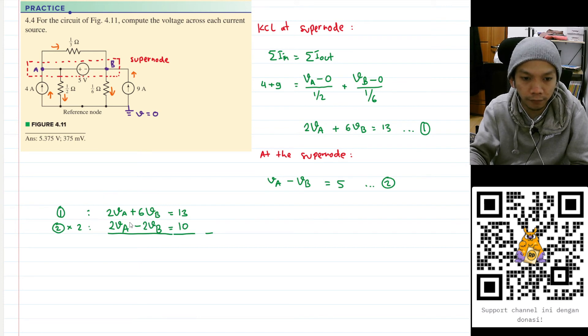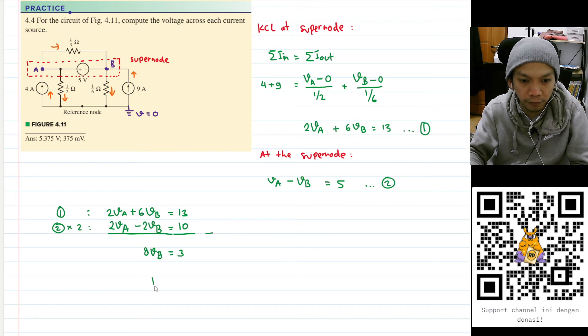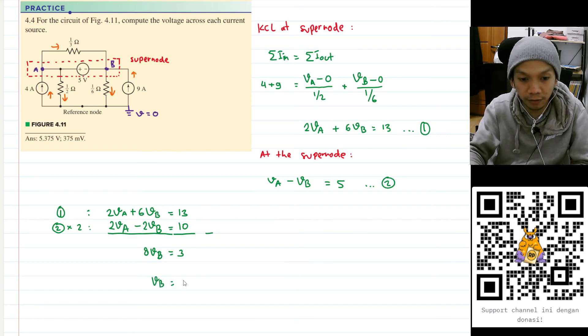I will have, what, four VB? Oh no, not four. Six minus minus two, that will be eight. Eight VB. And on the right hand side I will have three. So I will have VB is equal to three over eight. And three over eight is 0.375. And for here the unit is volt, or we can just follow the answer key by converting it to millivolt, so I'll have 375 millivolt.